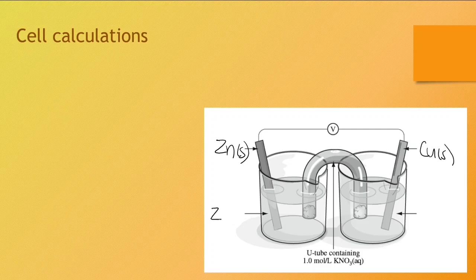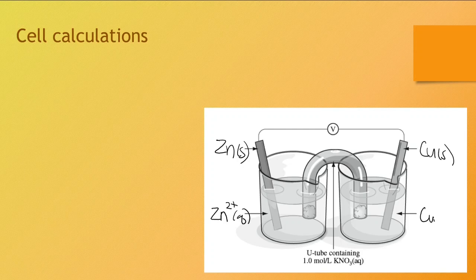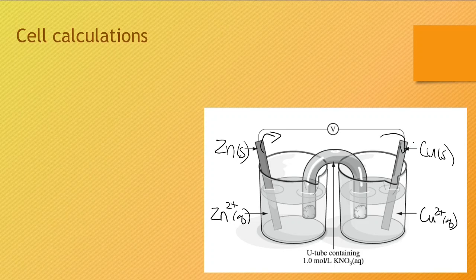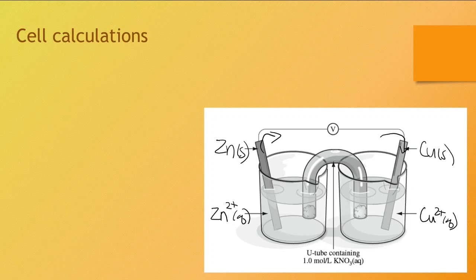So in a zinc-copper cell, or galvanic cell, of course electrons are going to leave the zinc electrode, travel through the external wire, and arrive at the copper electrode. And that is really the main thing that we need to focus on.